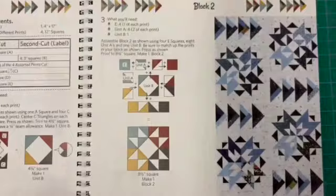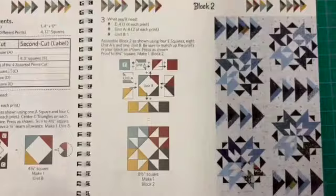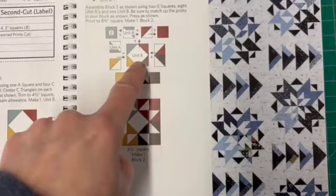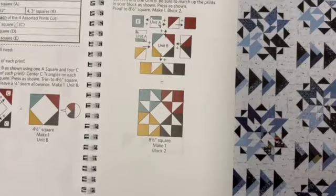And step three is really pretty self-explanatory if I bring the book into view here. You can see you're just taking that middle unit that we're creating below the book and you're gonna add the half square triangles and the squares following the diagram on page seven of the book.